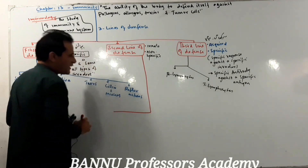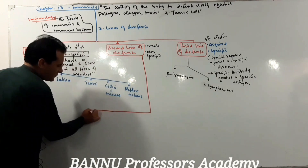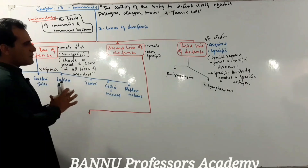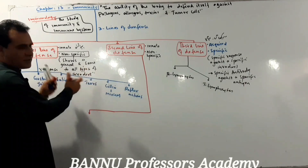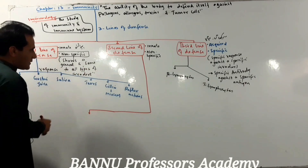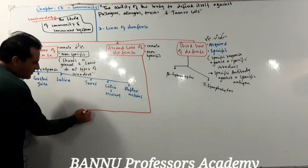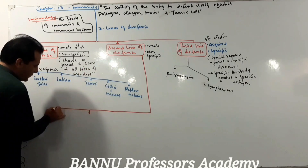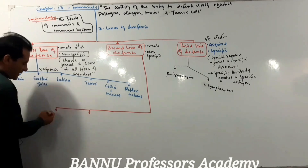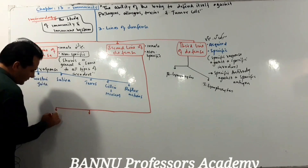The second line of defense is a summary of this chapter. One component of the second line of defense is neutrophils — neutral cells — which are white blood cells.